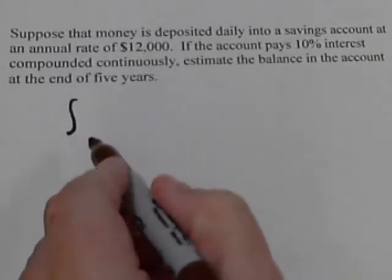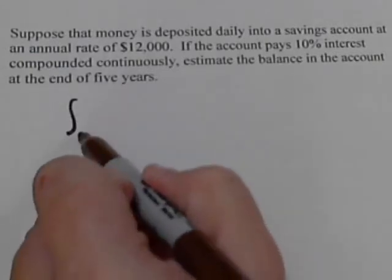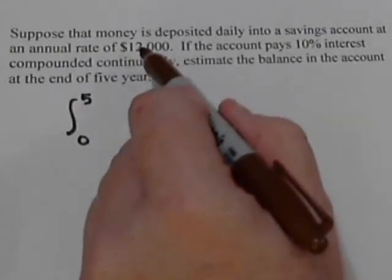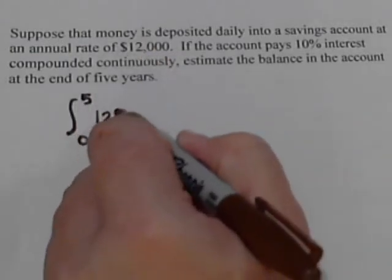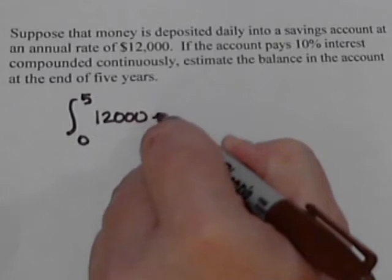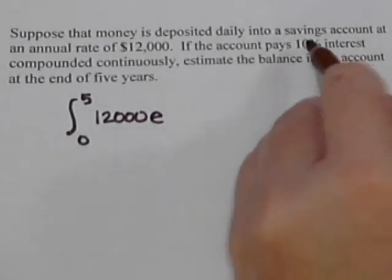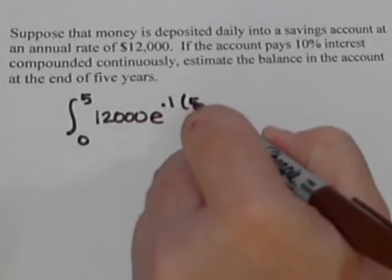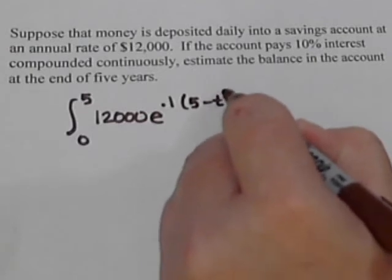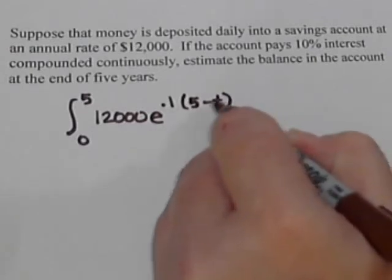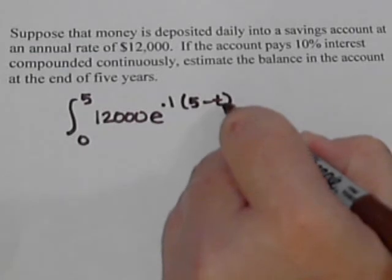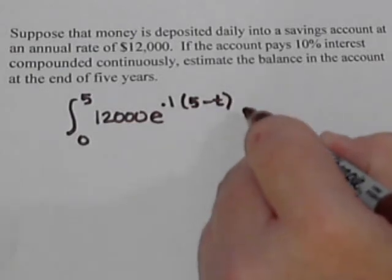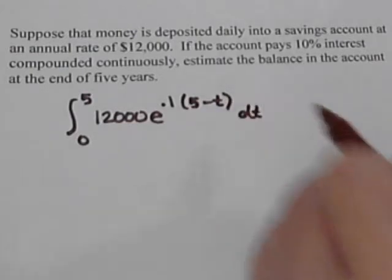There's a special formula for this. We're going to take the integral over these five years, from zero to five, of our formula: twelve thousand — that's our principal — compounded continuously, so e to the 0.1 times (5 minus t). That's our interest rate, but now we're doing this as time decreases: it starts at five and goes down to zero. At the beginning t is zero, so five minus zero is five. At the end t is five, so five minus five is zero.